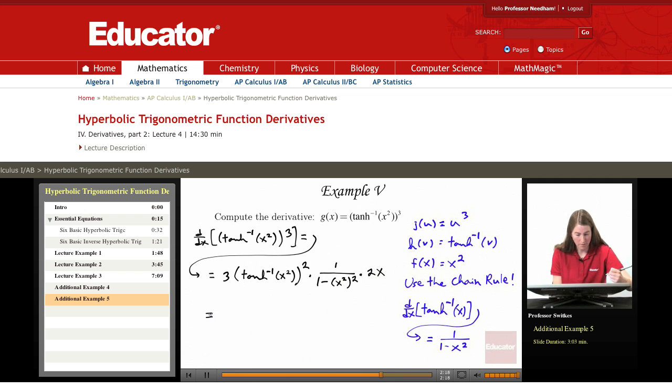And now we just have to put this all together. I'll multiply the three times 2x and get 6x. In the denominator, we have one minus x to the fourth, from the one minus x squared squared, and then we have times inverse hyperbolic tangent of x squared whole thing squared, and that should be our result.